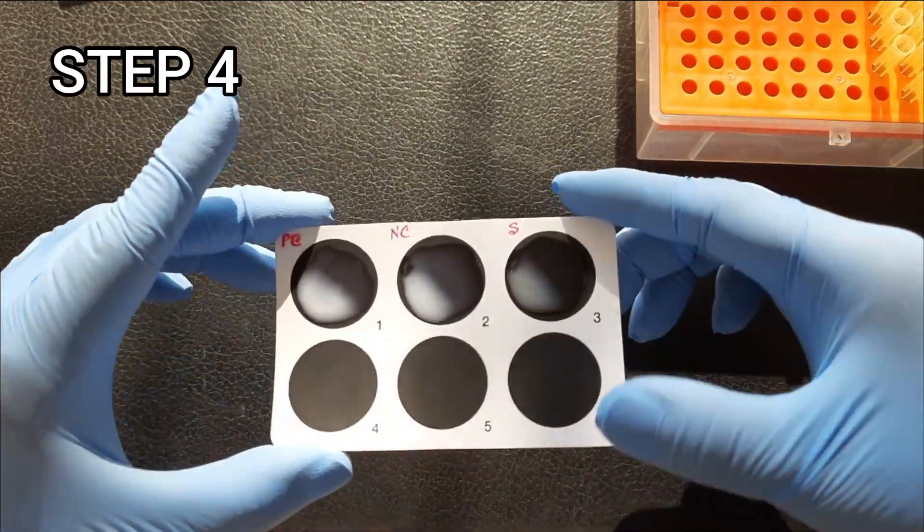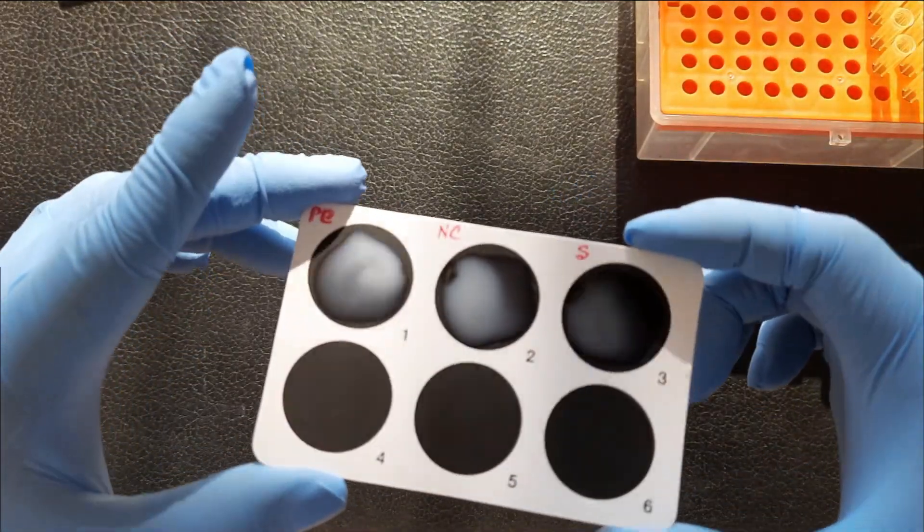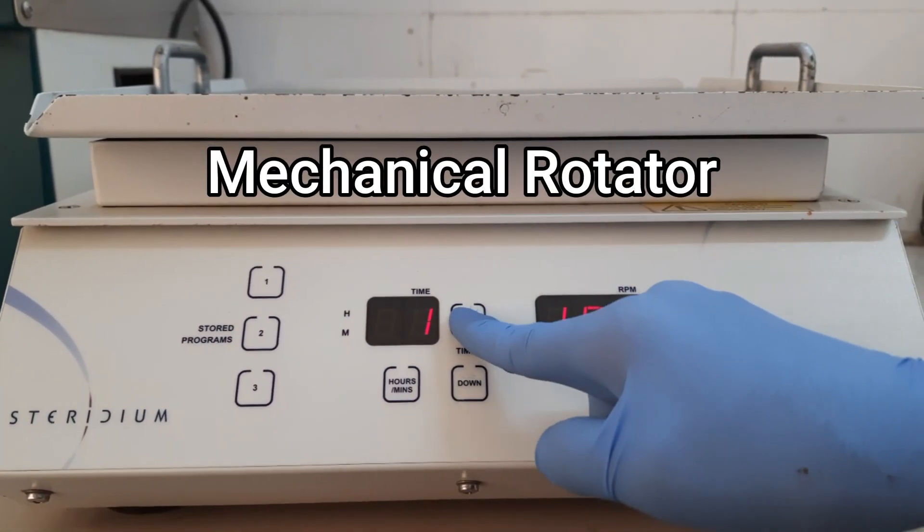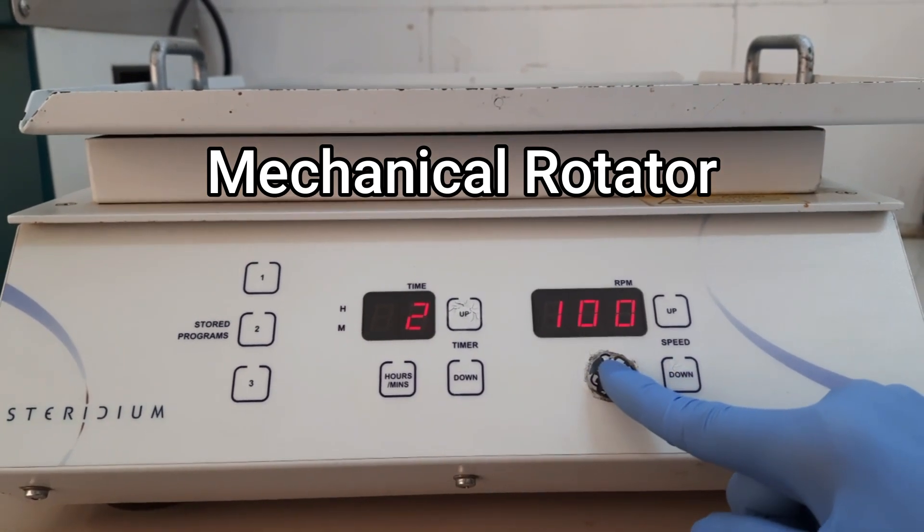Step 4. Rock the slide gently back and forth, or place the slide on a mechanical rotator at 100 RPM for two minutes and observe for any agglutination with the naked eye.